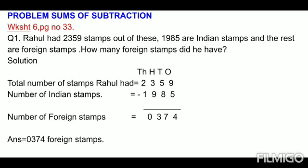Now we all know that this is a sum of subtraction. So first statement, we will write total number of stamps Rahul had. Then number of Indian stamps he had. And what you have to find out is the number of foreign stamps. We will read the question again and write down figures in front of the statements. Don't forget to write down place values.